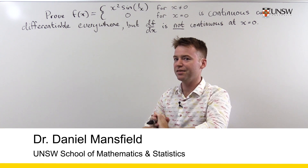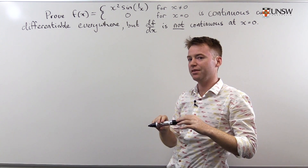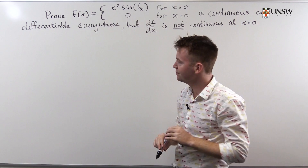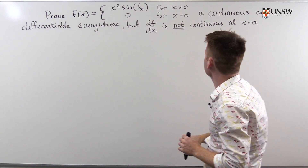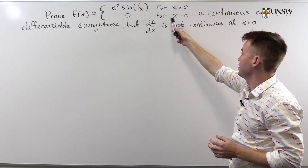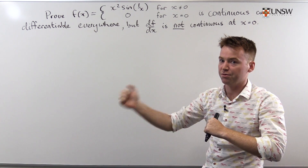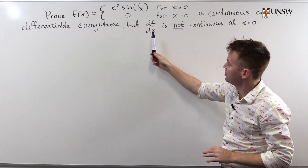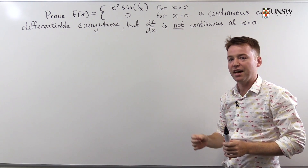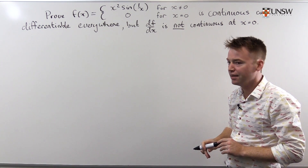In this interesting problem we're going to look at a function that is differentiable and continuous but whose derivative is not continuous. Here we have the function defined as x squared times sine of 1 over x when x is not 0, and 0 otherwise. We will first demonstrate that it is differentiable. We'll get continuity for free because a differentiable function is necessarily continuous, and then we'll observe that df/dx is not continuous at x equals 0. Let's begin.